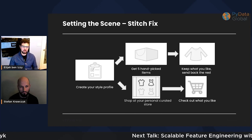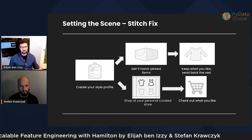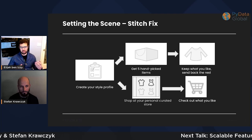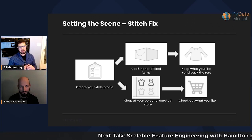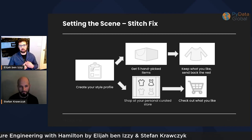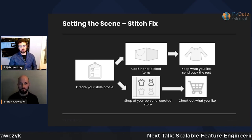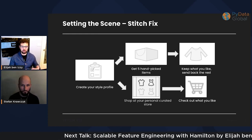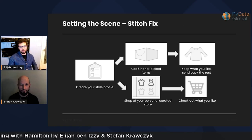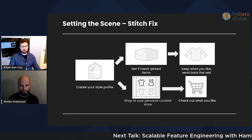First, I want to set the scene and talk about the company I still work at — it's called Stitch Fix. If you're not familiar, it's a pretty simple idea. You create your style profile, meaning you fill out a form online and give us information about what you like and don't like, what might fit or not, what you'd like in the past. Then you get five handpicked items curated by both an algorithm and a stylist to get you exactly what you want. You keep what you like and send back the rest. Another avenue is you can shop at your own personal online curated store — algorithms recommend clothing, and you check out what you like and return what you don't. The interesting thing is that data science powers pretty much everything in the user experience.